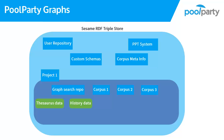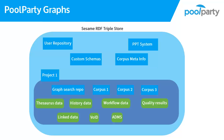The History data graph contains everything related to changes that occur in the project. The Workflow data graph is written when you use the Approval workflow feature. Quality results are stored in the Quality report graph when you generate a report. Linked data is the graph where data from other resources are copied into, for example from DBpedia. The VoID graph contains project metadata such as number of concepts, creation date, and so on. The ADMS graph contains data used to describe the thesaurus if you use the ADMS ontology. And the deprecated graph contains the concepts which were previously deleted.